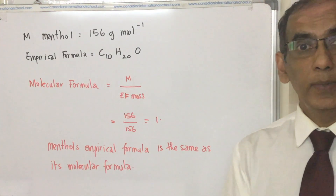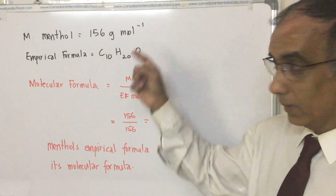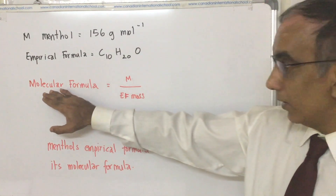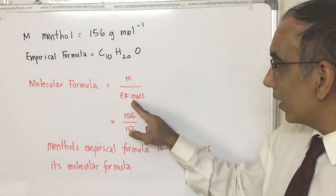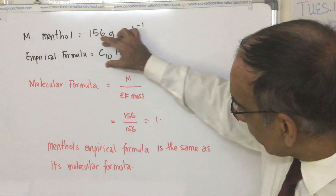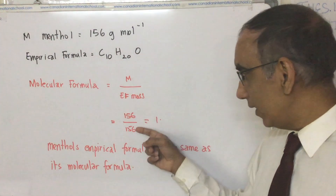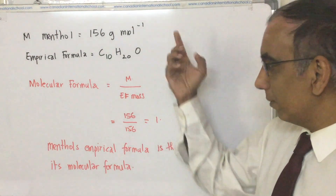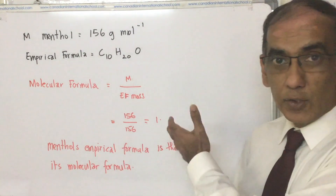The final part asks for the full molecular formula of menthol. We have determined the molar mass as 156 g/mol and the empirical formula as C10H20O. Dividing the molar mass of menthol by the empirical formula mass — which also comes to 156 — gives 1. This means the empirical formula and the molecular formula are the same, so menthol's molecular formula is C10H20O.